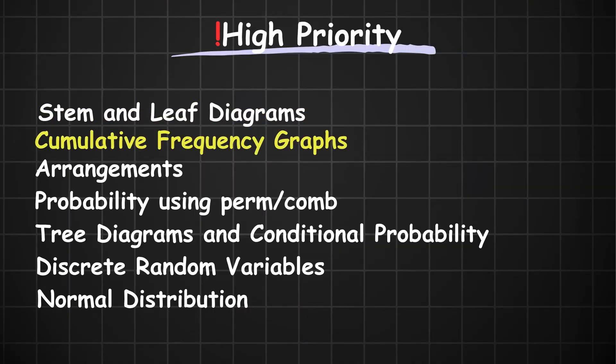Putting it all together, here's a list of all the priority questions for the 9709 CIE A-level math probability and statistics one May June 2025 exam: stem and leaf diagrams, cumulative frequency graphs, arrangements, probability with permutations and combinations, tree diagrams and conditional probability, and all of discrete random variables and all of your normal distribution.